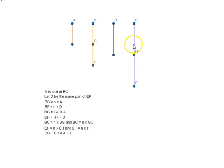BG plus EH. This is equal to A, this is equal to D. So BG plus EH is equal to A plus D. Similarly, GC plus HF is equal to A plus D.